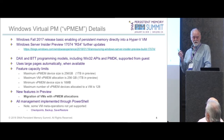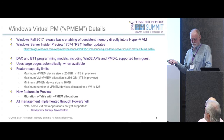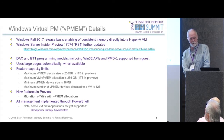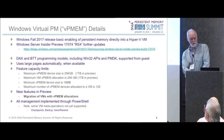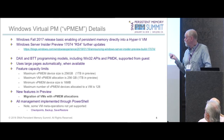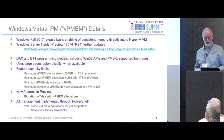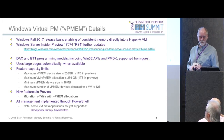The RS4 preview supports DAX and BTT programming models, including Win32 APIs and PMDK — all supported from the guest — basically the full exposure of Windows PM support from the guest. It uses large pages automatically when available. There are some feature capacity limits: the initial release had a 256 GB maximum PMM size; we're raising that to one terabyte in the preview. Maximum number of devices is 128.